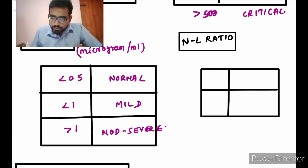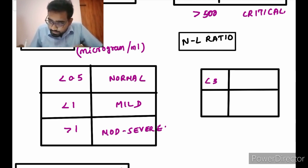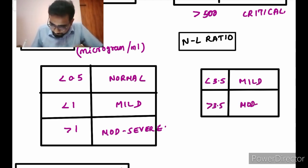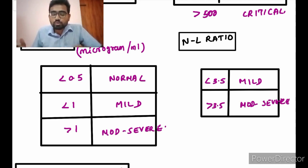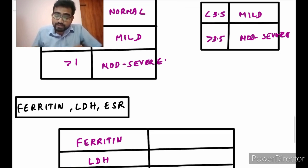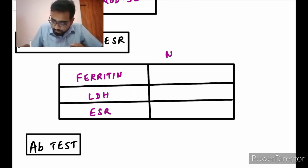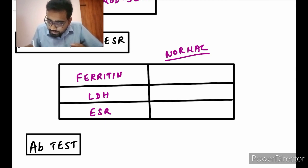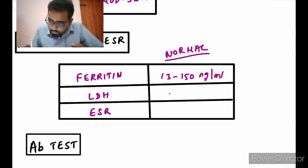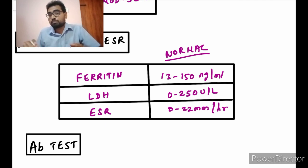The neutrophil to lymphocyte ratio: any value less than 3.5 is mild; if it is more than 3.5 then that is moderate to severe. Next are ferritin, LDH, and ESR. The normal value for ferritin is around 13 to 150 nanograms per mL; LDH is anywhere between 0 to 250 units per liter; and ESR is 0 to 22 mm per hour. ESR is the most non-specific.